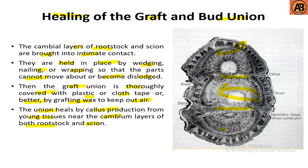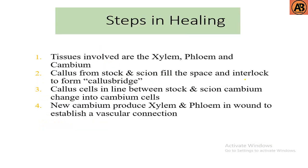This is the healing process of the graft union. The steps in healing involve the xylem, phloem, and cambium cells. New cambium cells form, and the new cambium produces xylem and phloem in the wound to establish a vascular connection.